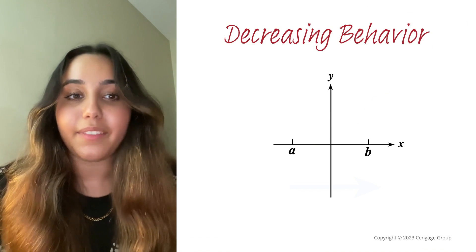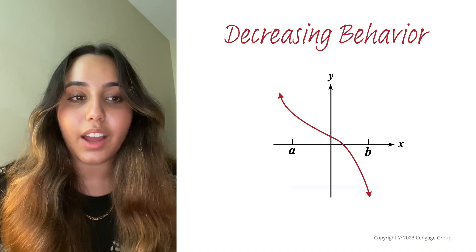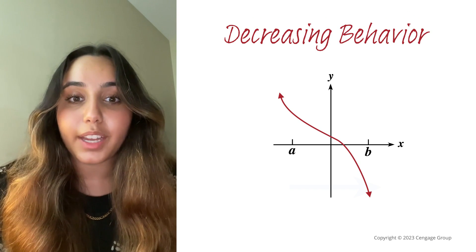Type 2 is known as decreasing behavior. As the values of x increase on the intervals a through b, the values of f of x could decrease.